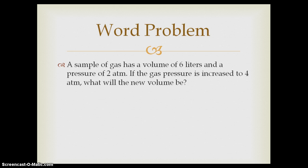We know that the equation that we're going to use is P1 times V1 equals P2 times V2. Reading the problem, we can identify that our first pressure will equal two ATM. Our first volume will equal six liters. Our second pressure will equal four ATM. And we need to solve for our second volume.